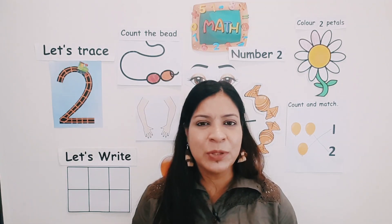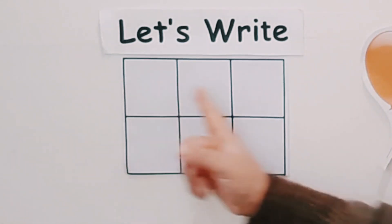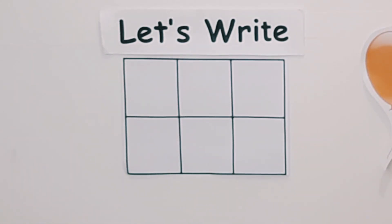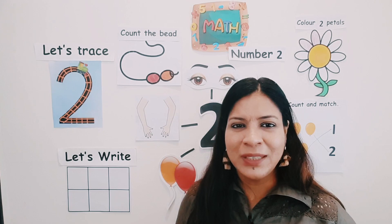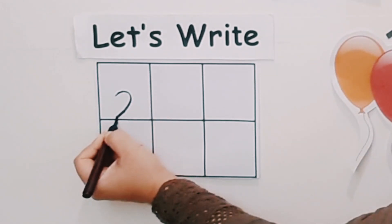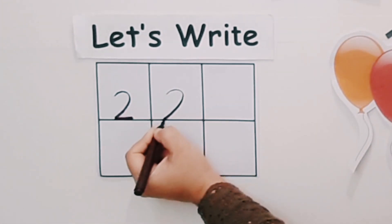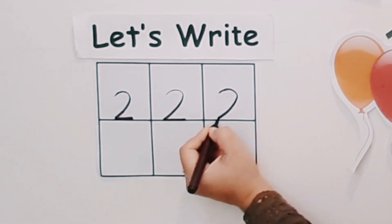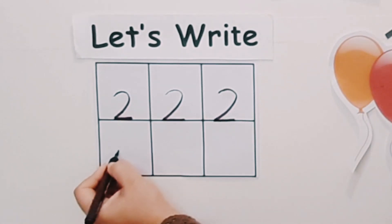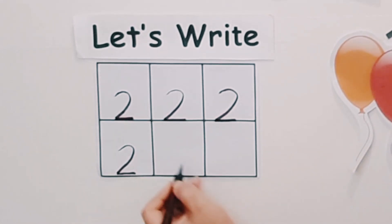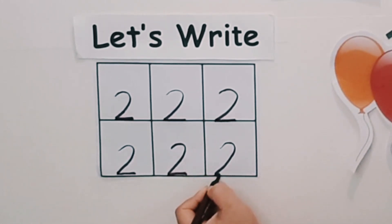Now let's learn to write number two. I'm using my brown pen to write number two. I have some boxes — I will write number two in these boxes. You can quickly grab a piece of paper and a pencil, or a slate and a piece of chalk, and write along with me. Make a curve and then a sleeping line — around and across. There is a curve and a sleeping line. Around and across.